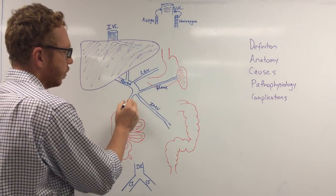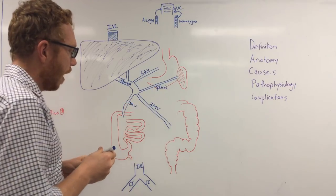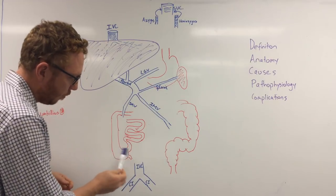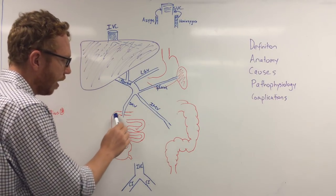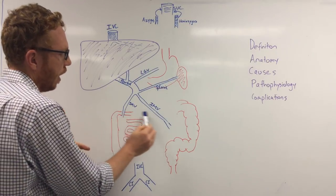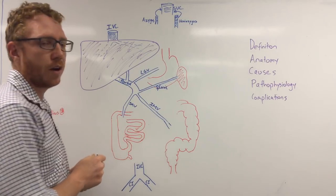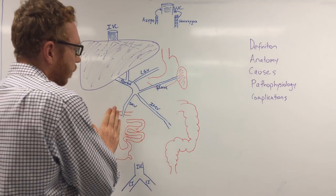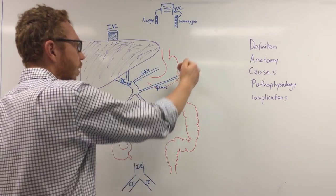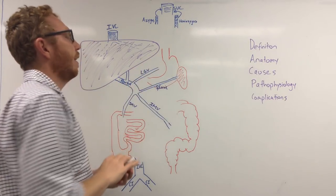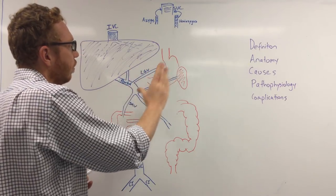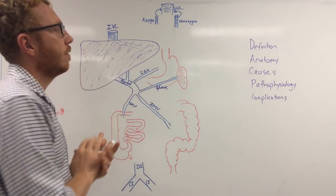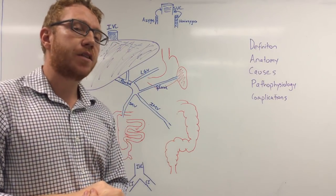All of that bowel is drained by the inferior mesenteric vein. The rest of the bowel is drained by the superior mesenteric vein, which drains most of the small intestines, the cecum, ascending large bowel, hepatic flexure, and approximately two-thirds of the transverse colon. So the superior mesenteric, inferior mesenteric, splenic, and left gastric veins all converge into the portal vein to drain into the liver at a pressure of 5 to 6 millimetres of mercury.